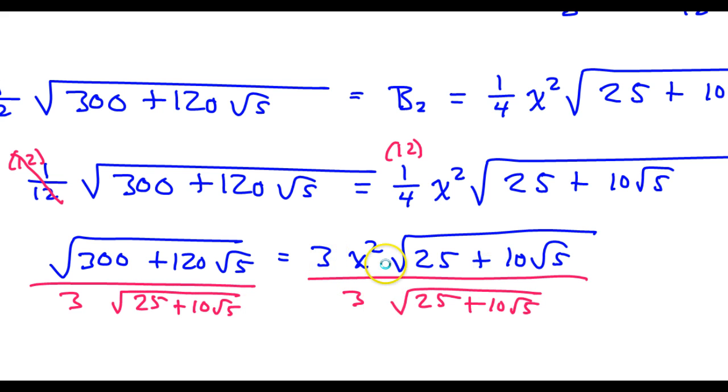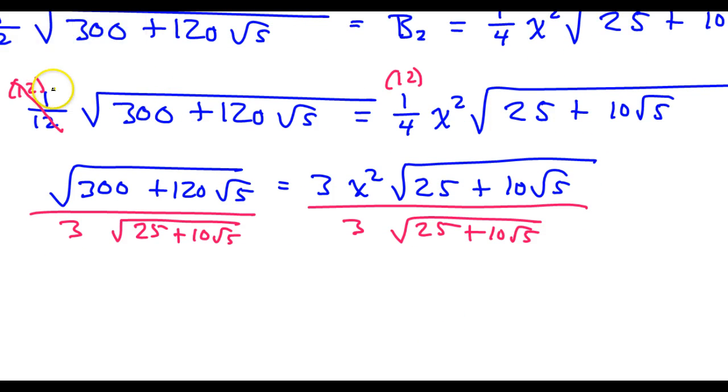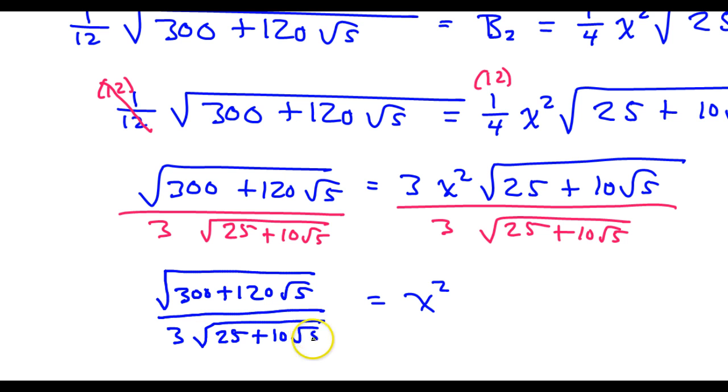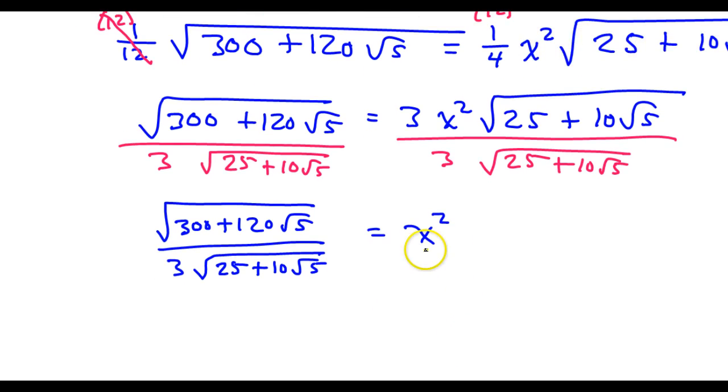That'll cancel out everything except for x squared. So that's going to leave me with x squared over there. So then all of this is going to be what I have equal to x squared. So of course if I want to get x by itself I need to take the square root of both sides. Technically this would be plus or minus but I know it has to be positive because we can't have a negative length. So this should give us the final answer.